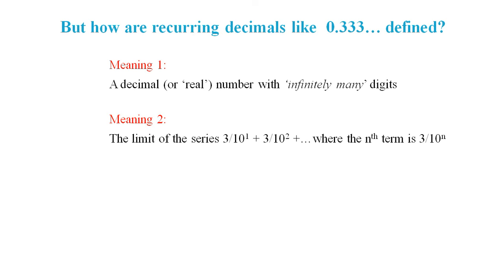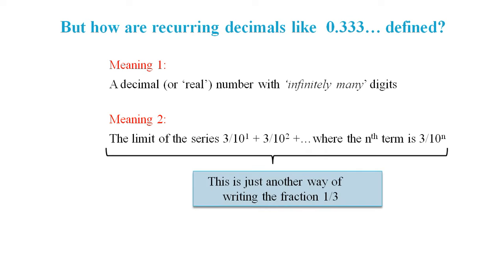The limit of the series where the nth term is 3 over 10 to the power n. But this second meaning effectively says that when we write 0.3 recurring, it's just another way of writing the fraction 1/3.